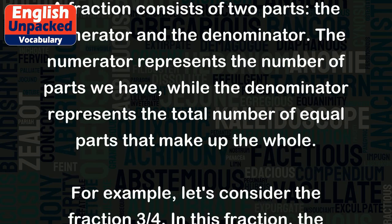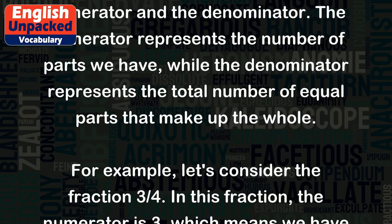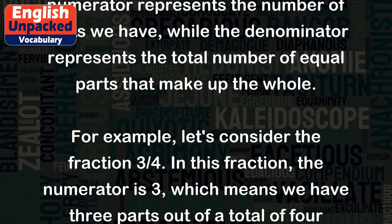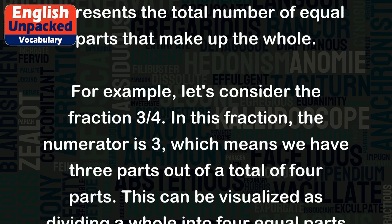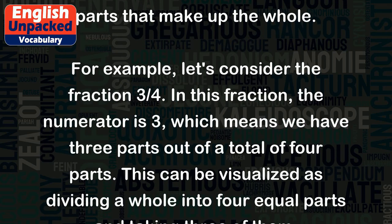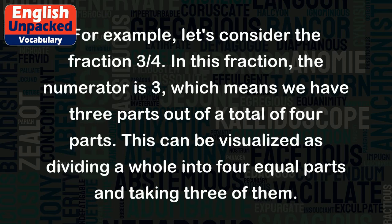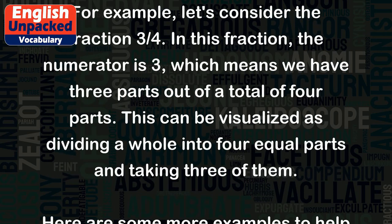For example, let's consider the fraction 3 quarters. In this fraction, the numerator is 3, which means we have 3 parts out of a total of 4 parts. This can be visualized as dividing a whole into 4 equal parts and taking 3 of them.